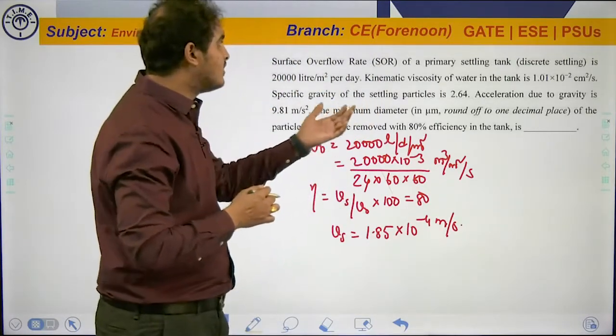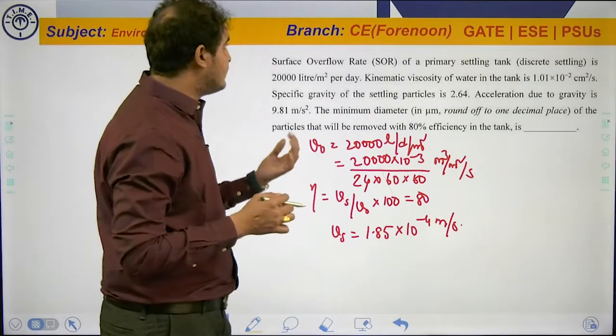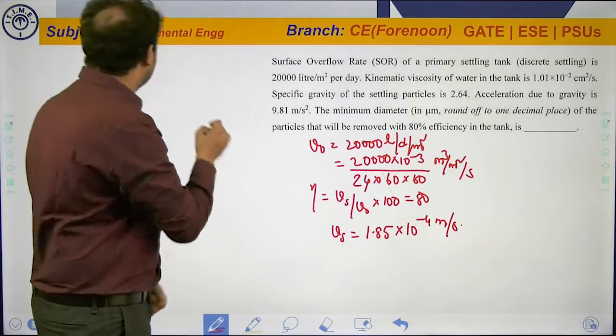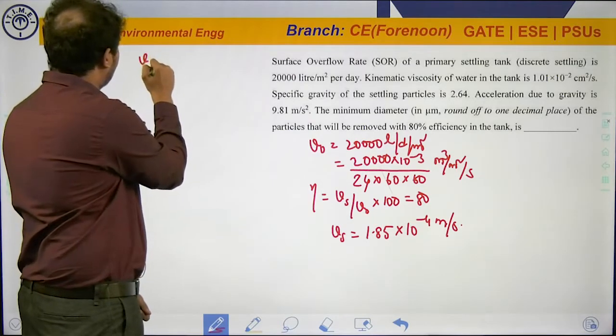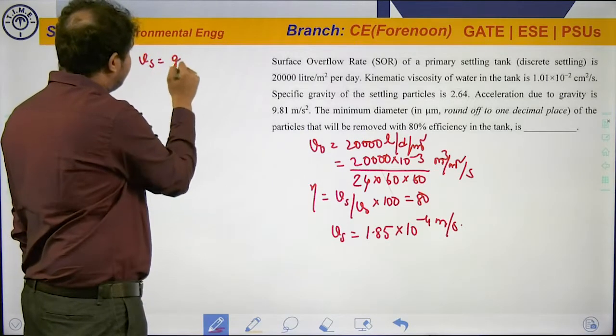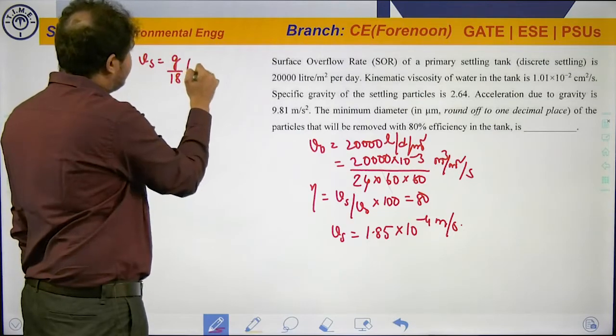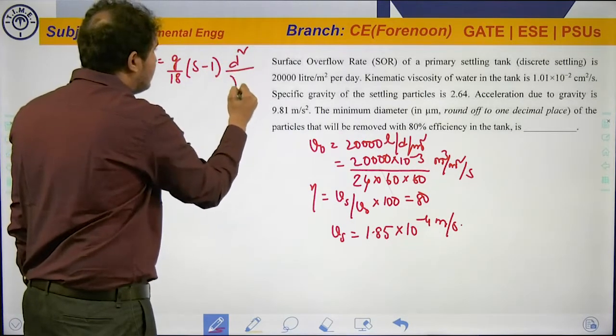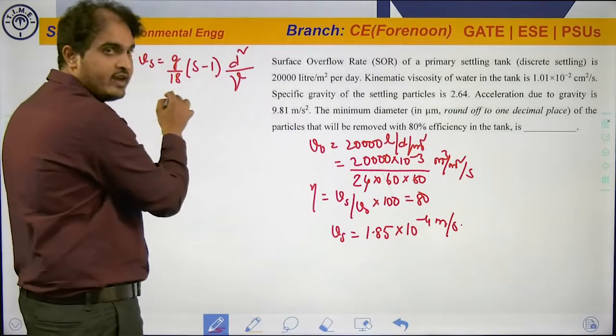Now, we are asked to work out the minimum diameter. So the first assumption we need to take is Stokes law is valid. When we have Stokes law to be valid, we know the settling velocity equation: Vs = g/18 × (S-1) × D²/ν, where ν is the coefficient of kinematic viscosity.